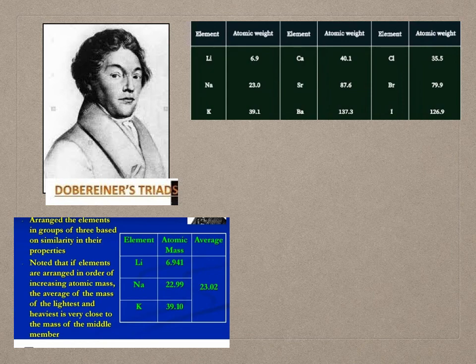As you can see in the table, the atomic mass of lithium is 6.9 and the atomic mass of potassium is 39.1. When the arithmetic mean of these two elements is calculated, it is found that the actual atomic mass of sodium is 23, which is very close to that mean. Hence, if elements are arranged in increasing order of atomic mass, the average of the lightest and heaviest is very close to the mass of the middle member.